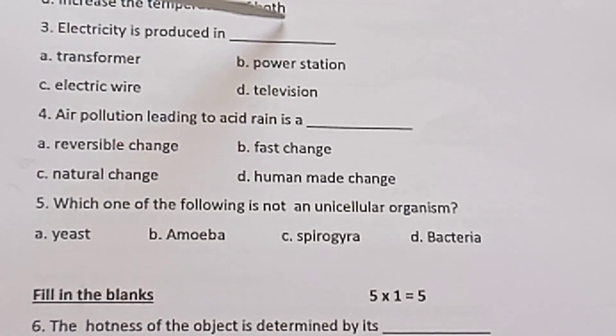Question 3: Electricity is produced in: a) transformer, b) power station, c) electric wire, d) television.